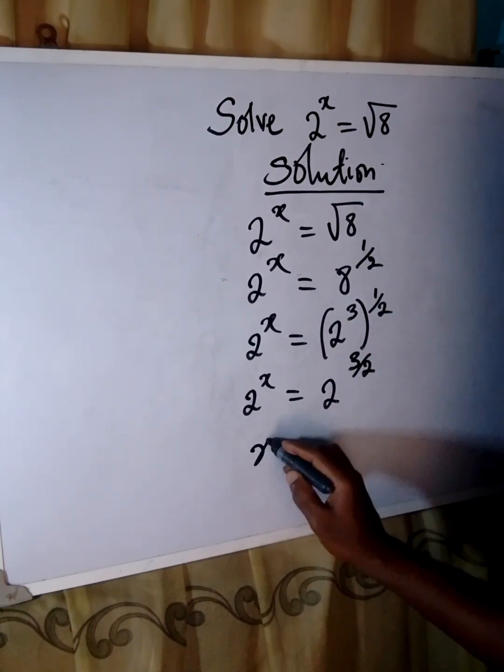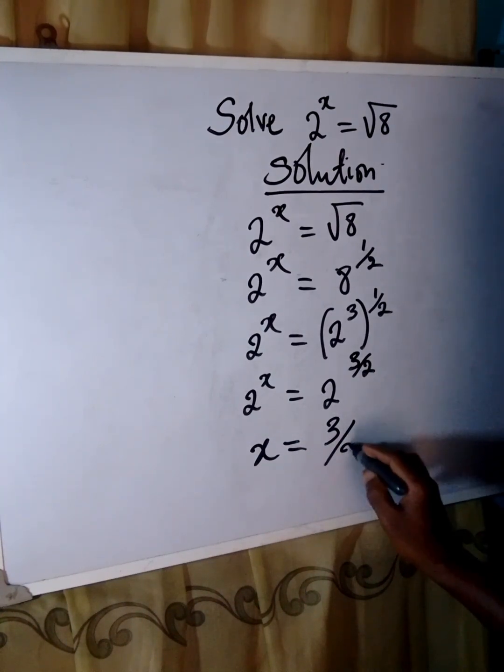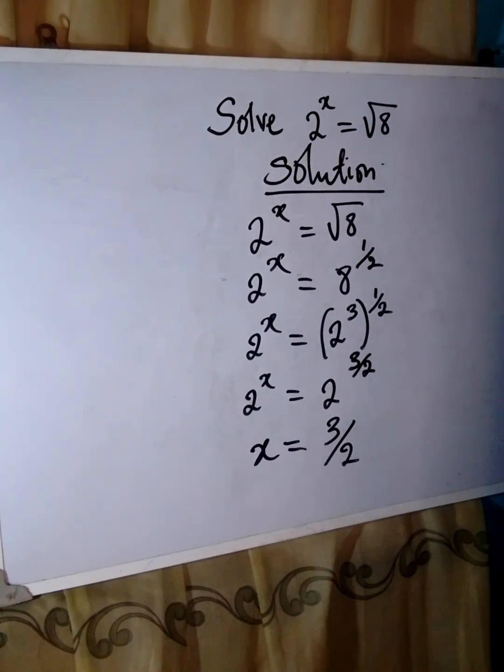Now, the bases are the same. Therefore, the powers must be equal. So our x is 3 over 2. Thank you for watching.